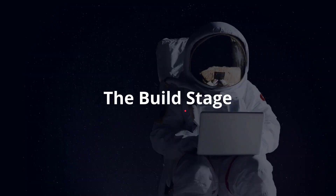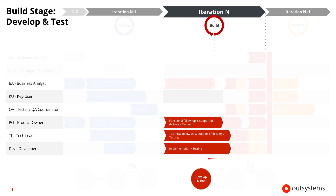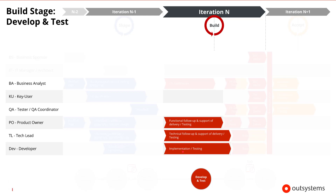Next, we have the build stage. In the build stage, there's also a sequence of three activities. The first is developing and testing the user stories. The developer, tech lead, and product owner are focused on getting the user stories implemented. Part of that work is testing — the developers will implement unit tests, and the tech lead and product owners will look at more high-level testing like end-to-end or integration testing. The status of these tests is then reported to the tester, so the tester can select the user stories for user acceptance testing — normally the stories that have no critical or major defects.